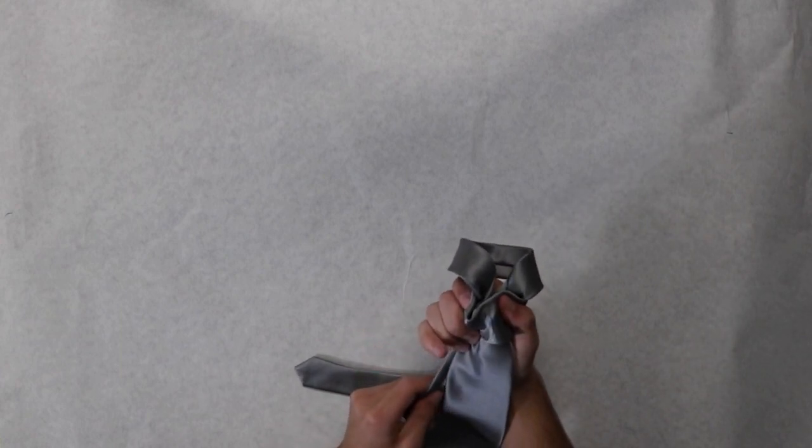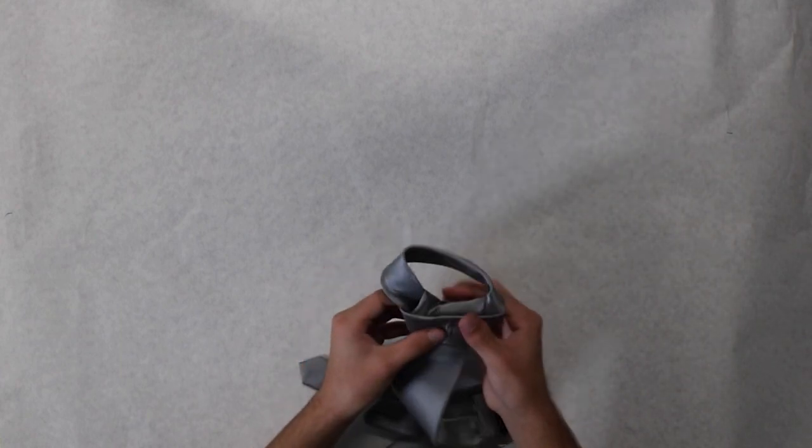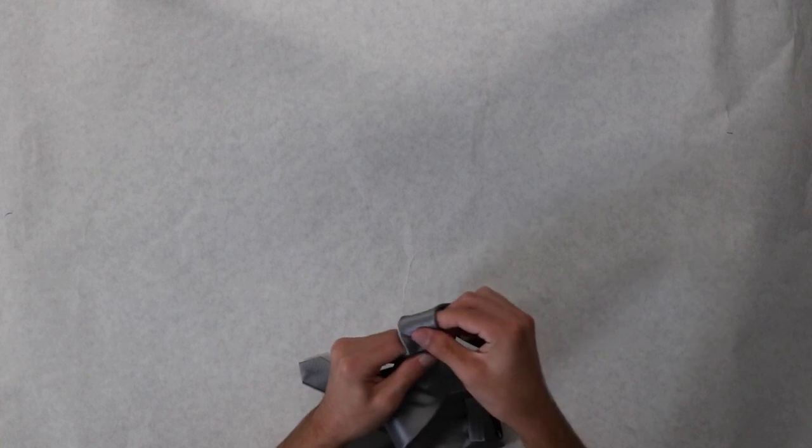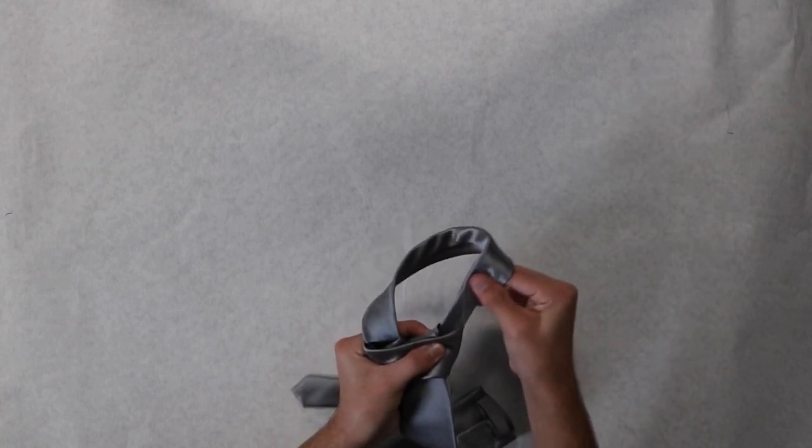To loosen, squeeze one of the ends on the knot and pull the smaller end out.